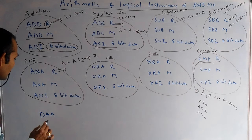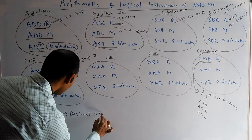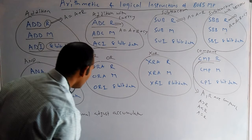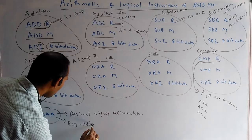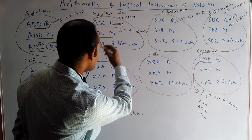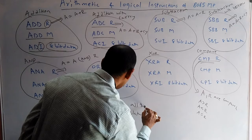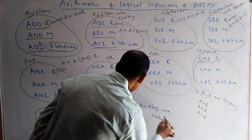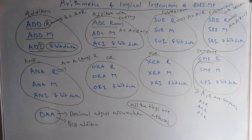Another instruction is DAA — Decimal Adjust Accumulator. DAA is used in BCD addition; this instruction is used to perform BCD addition. To add two BCD numbers, the DAA instruction is used. All these instructions affect all the flags.